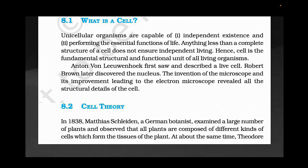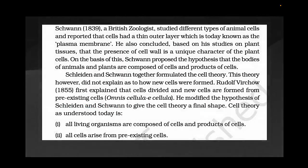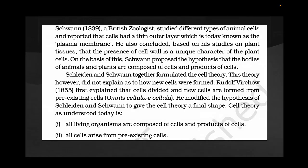At about the same time, Theodor Schwann, a British zoologist, studied different types of animal cells and reported that cells had a thin outer layer. Plant cells have a cell wall, but animal cells do not have a cell wall — only an outer thin layer, which is today known as the plasma membrane. He also concluded, based on his studies on plant tissue, that the presence of a cell wall is a unique character of plant cells.